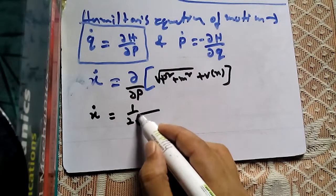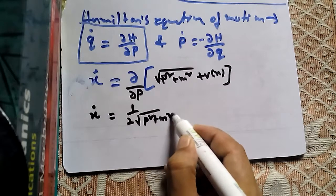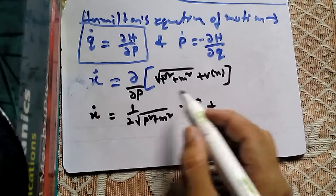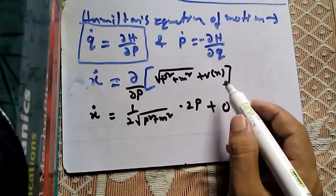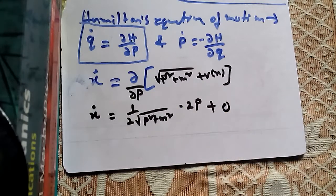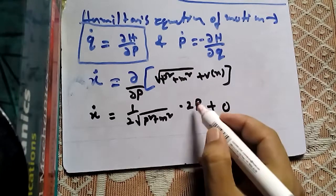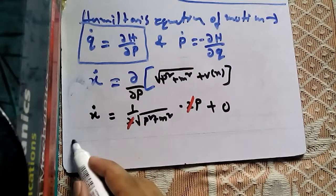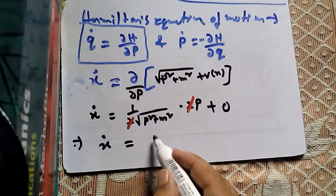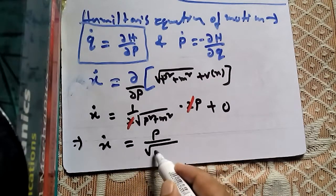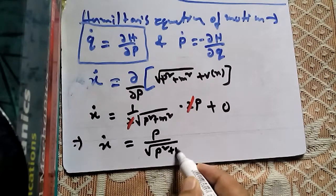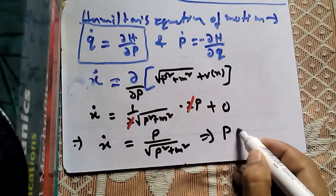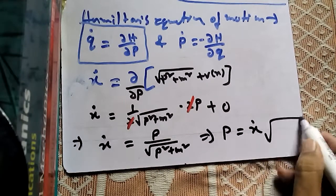Differentiating: the first term gives (1 / 2√(P² + M²)) · 2P, and differentiating V(x) with respect to P gives zero since it is not a function of P. The 2s cancel, leaving ẋ equals P / √(P² + M²). Therefore P equals ẋ · √(P² + M²). However, there is a difficulty: P still appears on the right side, so it must be eliminated further.